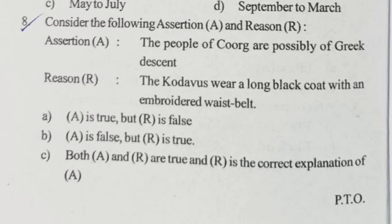Question eight is an assertion-reason type. Assertion A: the people of Coorg are possibly of Greek descent. Reason R: the Kodavas wear a long black coat with an embroidered waistband. Both A and R are true statements. However, R is not the correct explanation of A. So option C is correct — both A and R are true but R does not correctly explain A.